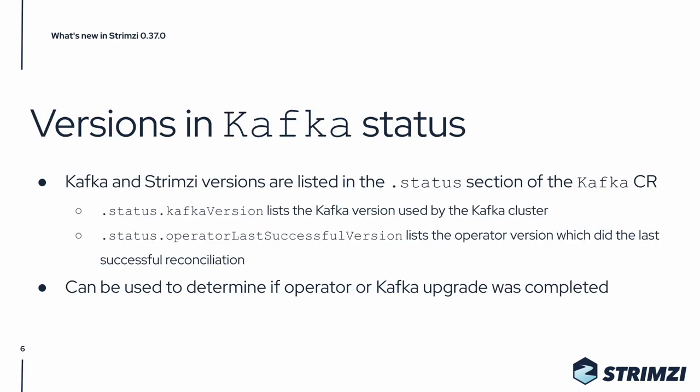We also improved the information which we share in the status section of the Kafka Custom resource. We now include two new fields: one shows the Kafka version used by this Kafka cluster, and the other shows the version of the Strimzi operator which did the last successful reconciliation. These versions should be useful to determine if an operator or Kafka upgrade was completed successfully.